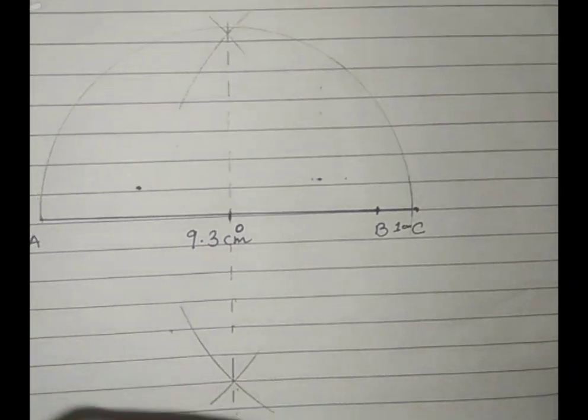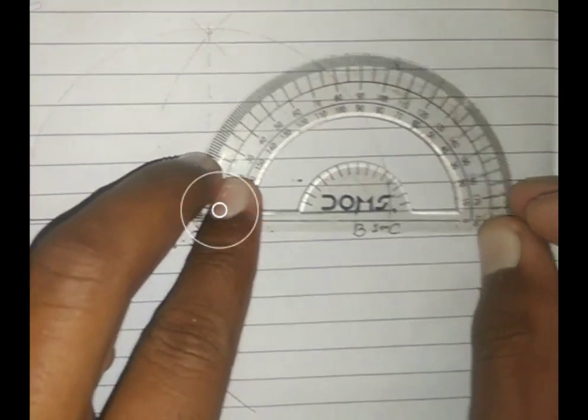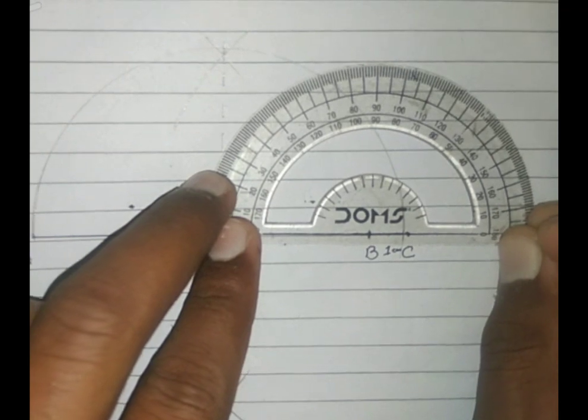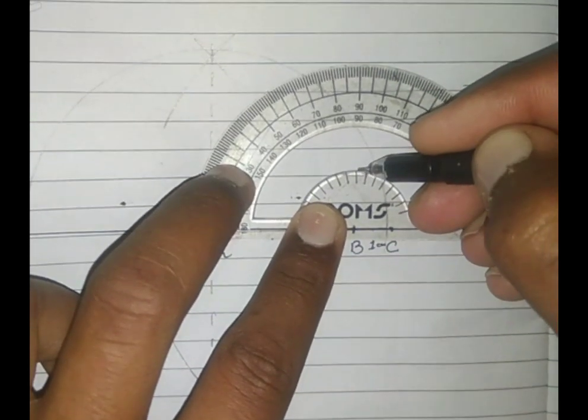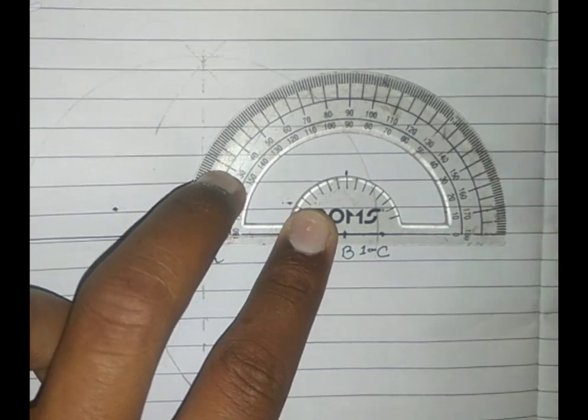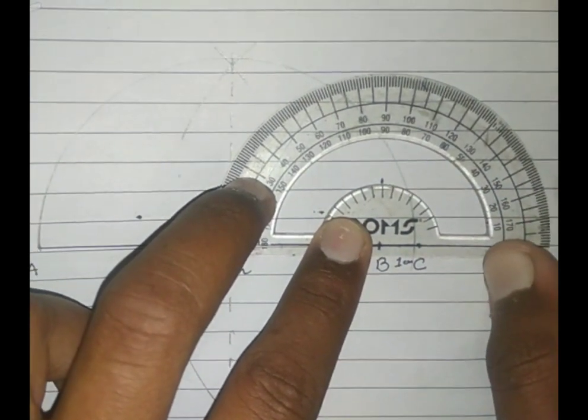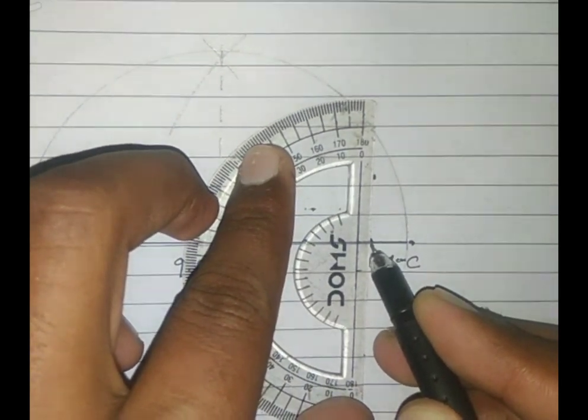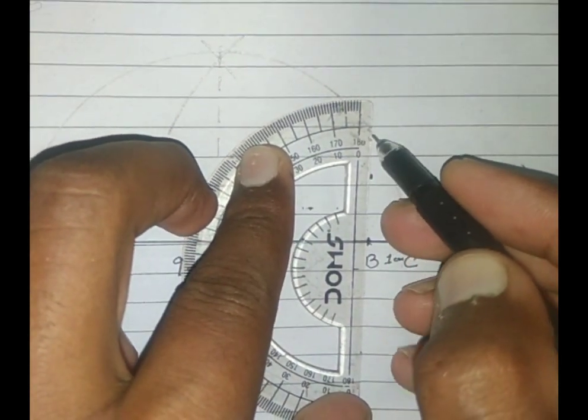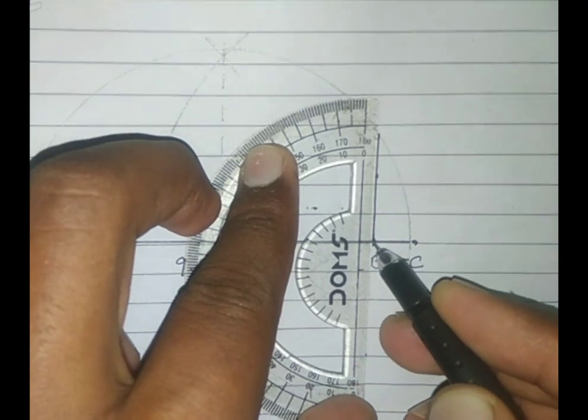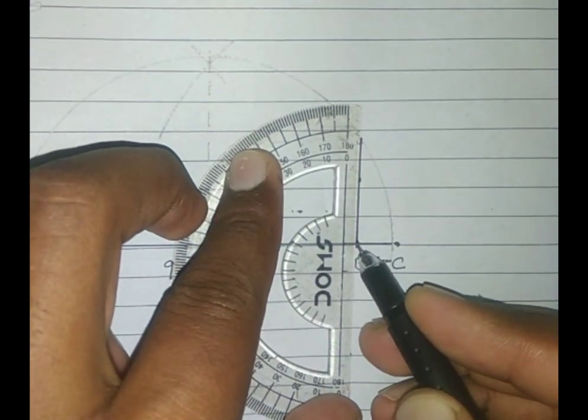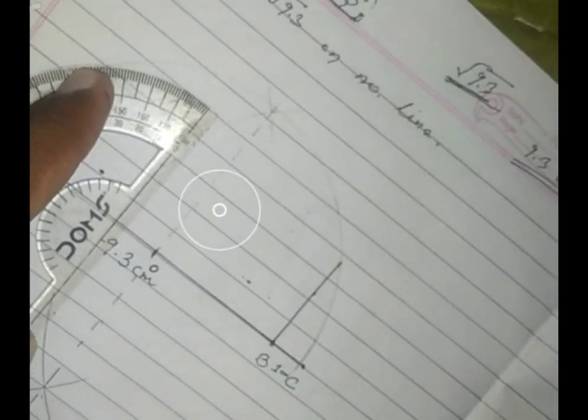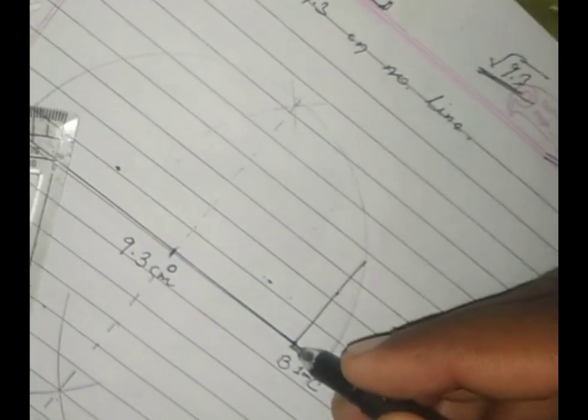Now you have to draw a perpendicular line on point B. You have to draw a perpendicular line on point B, just match it, which will cut somewhere on that semicircle. The length of this line will be exactly √9.3 centimeters.